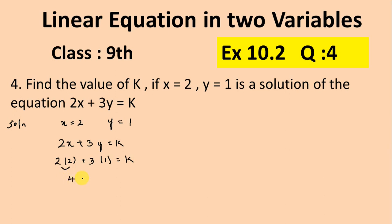2 times 2 is 4 plus 3 times 1 is 3, equals k. 4 plus 3 is 7, equals k. Therefore k equals 7. The value of k is 7. This is the fourth question of exercise 10.2.